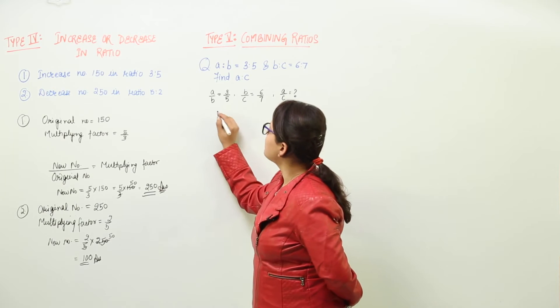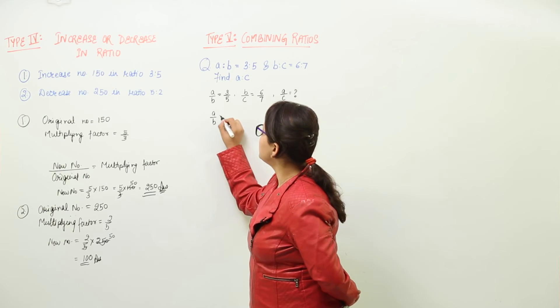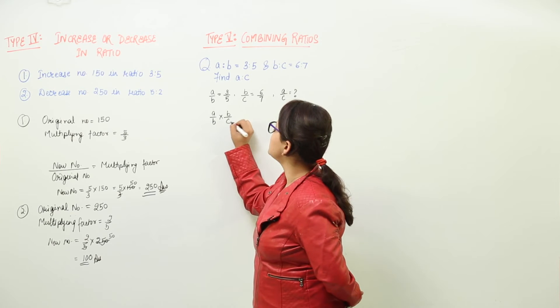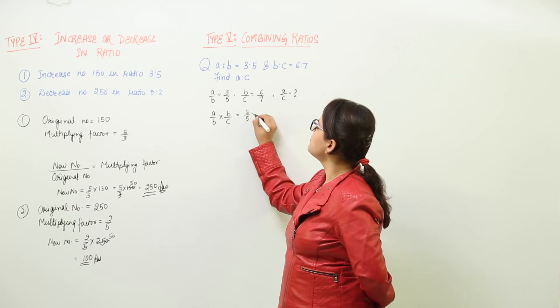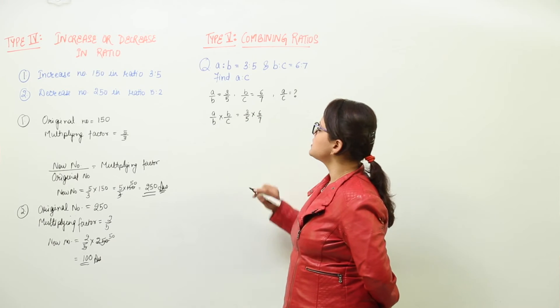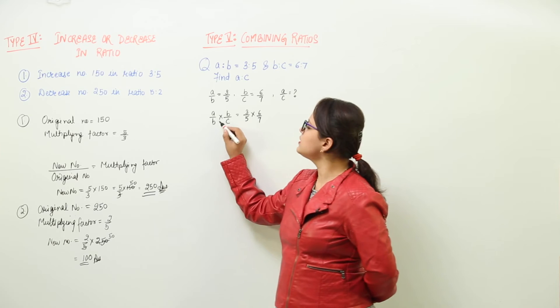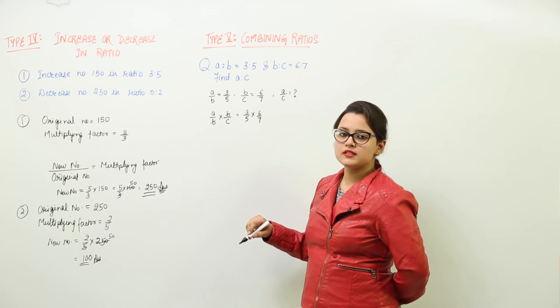If you multiply both of these, A upon B into B upon C, that means the right-hand sides will also get multiplied: 3 upon 5 into 6 upon 7. You can check here, the B can get cancelled.